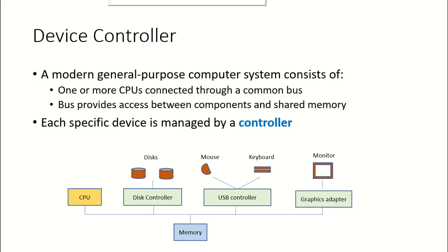In this video we are going to take a look at interrupts and how they are managed. A modern general purpose computer system consists of a central processing unit connected to other components like secondary storage, input devices like the mouse and keyboard, output devices like the monitor, and shared memory by means of a bus. This bus provides access between all the components and the shared memory.